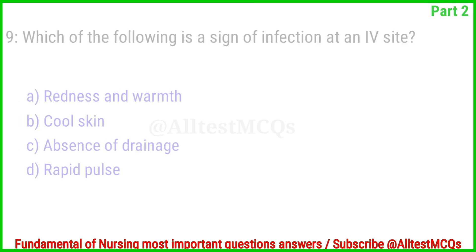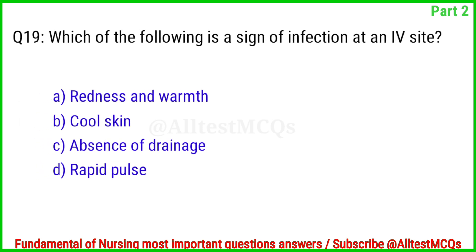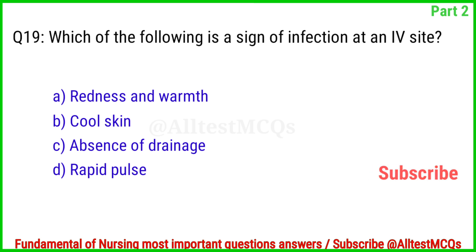Question No. 19. Which of the following is a sign of infection at an IV site? The right answer is Option A: Redness and warmth.